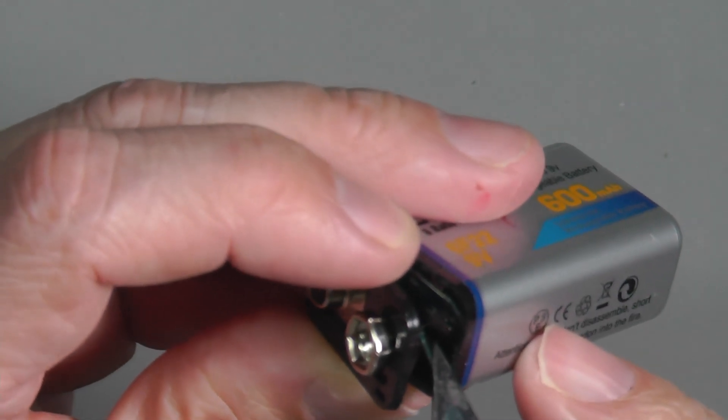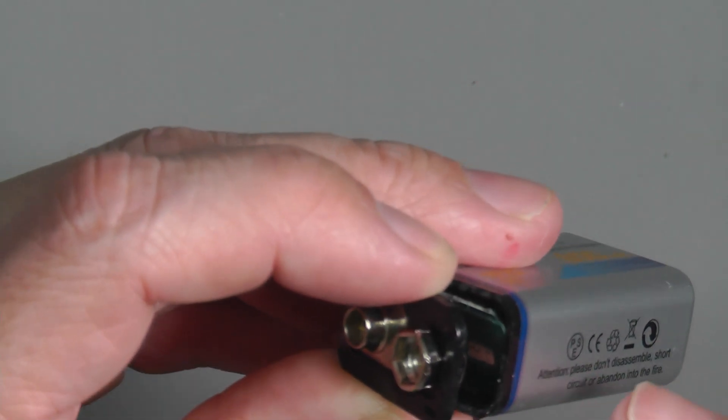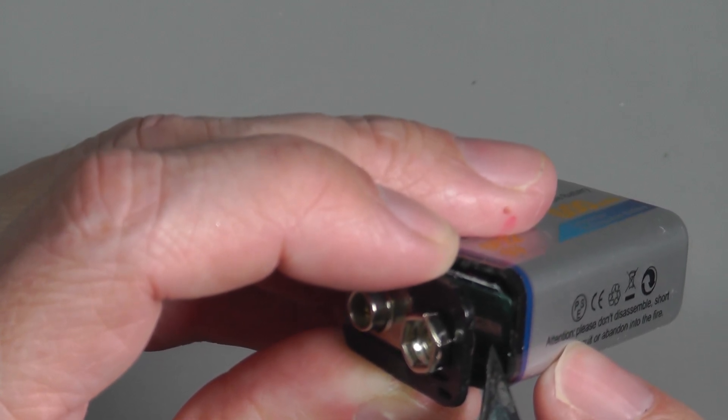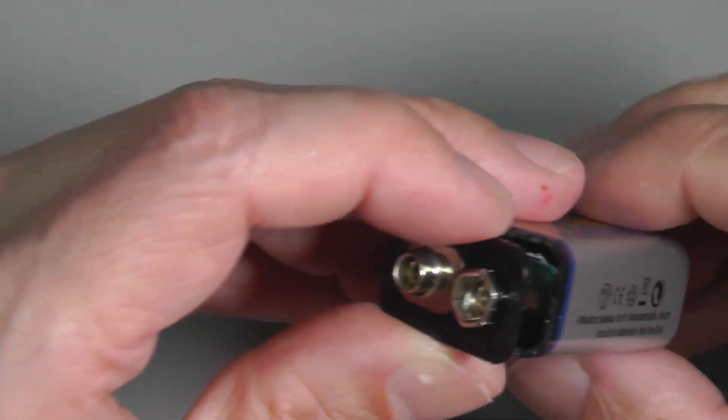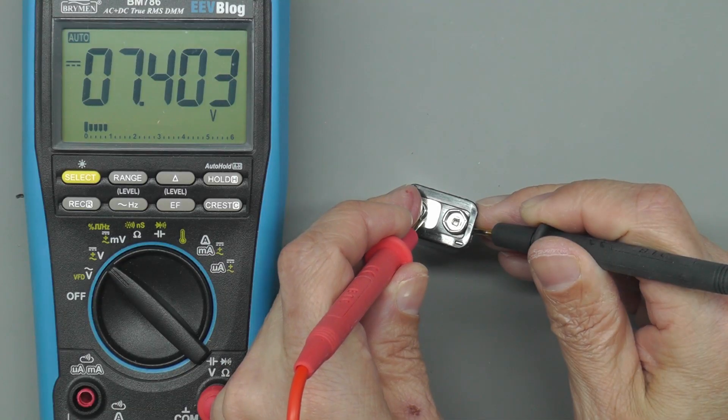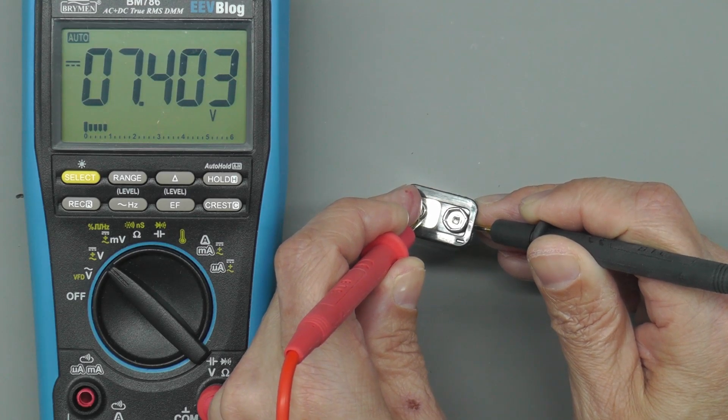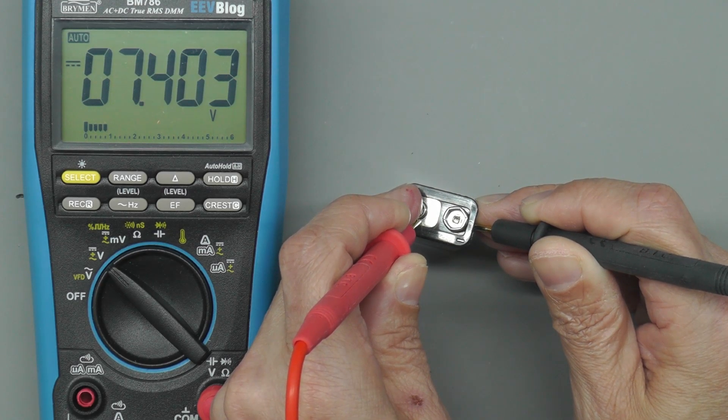But I don't think there's anything wrong with that. I think the problem is just that welded contact. So I'll put my multimeter down in there onto that contact and on the positive terminal. Let's see if we've got nine volts. Yeah, 7.4 volts - that's not a problem. That's obviously just like half charged or something like that. So yep, that's the problem.